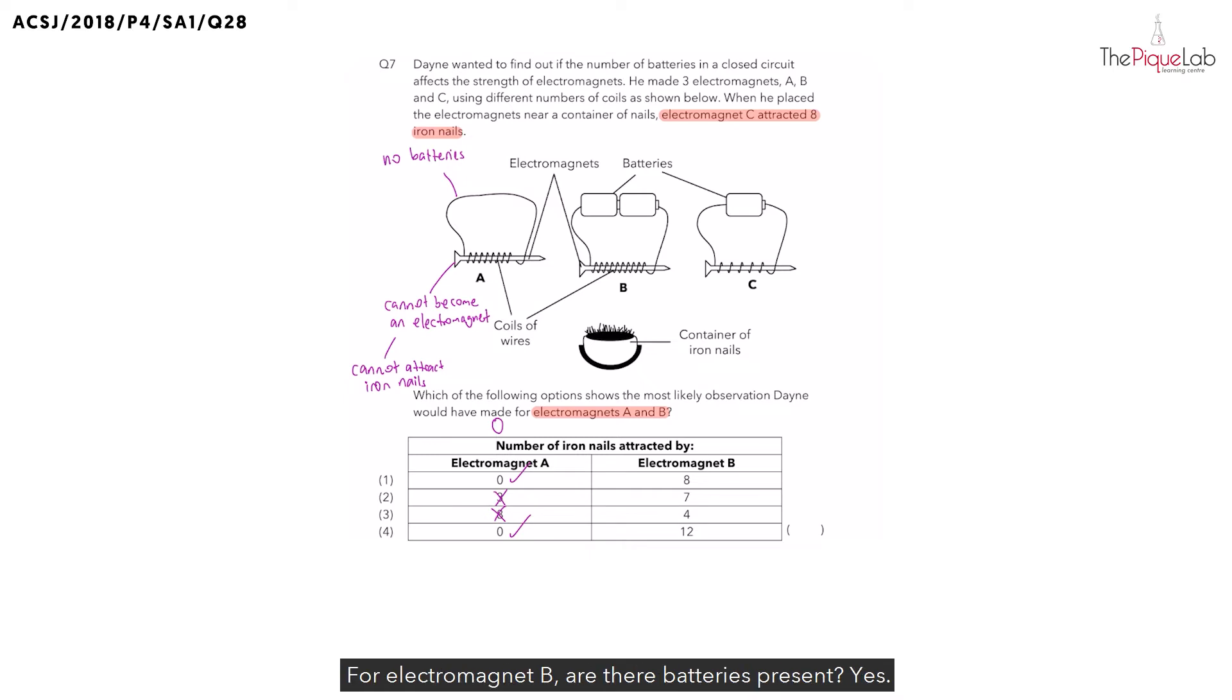For electromagnet B, are there batteries present? Yes. How many batteries do we see? There are a total of two batteries, which means we know that both B and C can become electromagnets. But are B and C exactly the same? No. What is the difference between B and C?